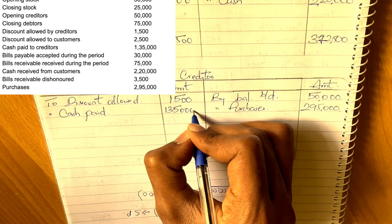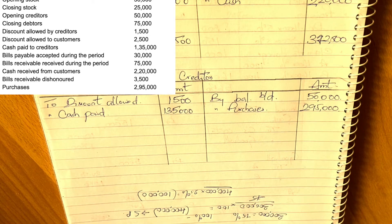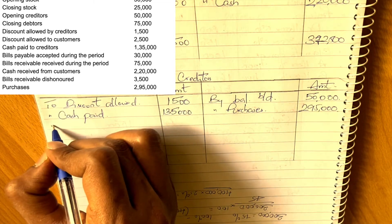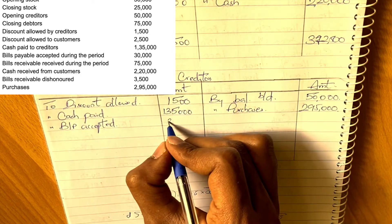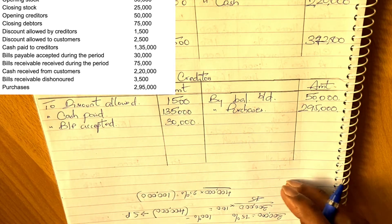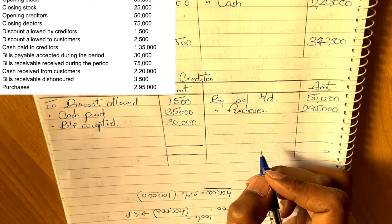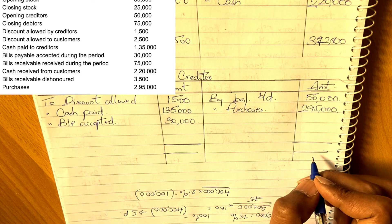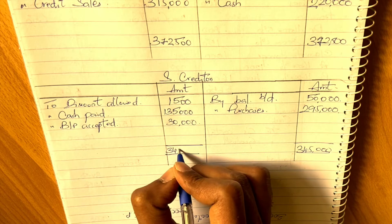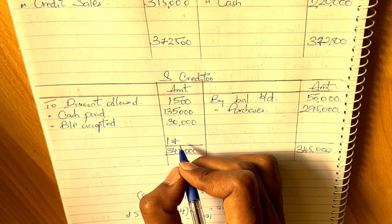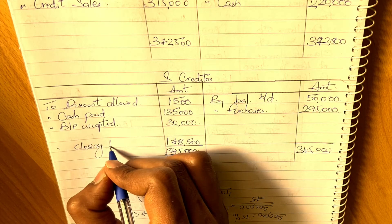Bills payable accepted during the period: similar to bills receivable, accepting a bill payable reduces the creditors balance and increases bills payable. So 'bills payable accepted' goes on the debit side — 30,000. Now totaling both sides of the creditors account, the balancing figure — which is the closing creditors balance — works out to 1,78,500. This is the balance carried down.